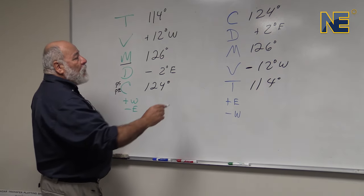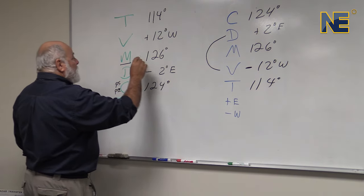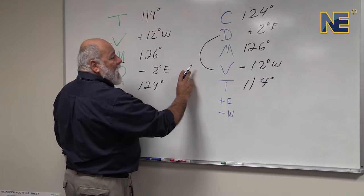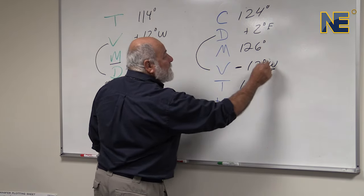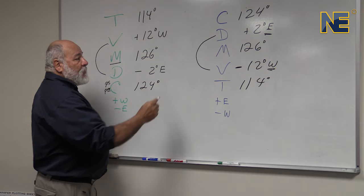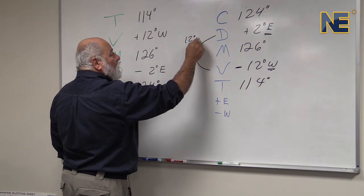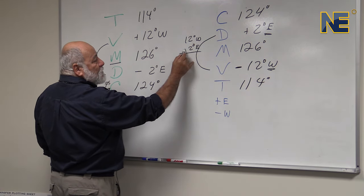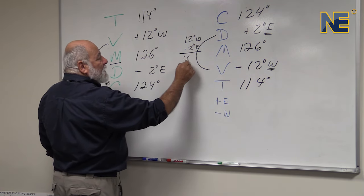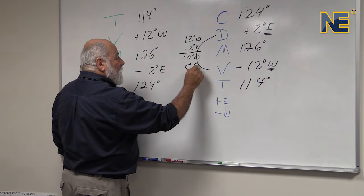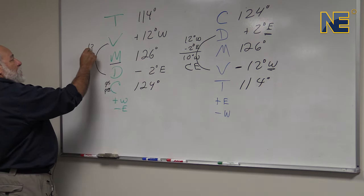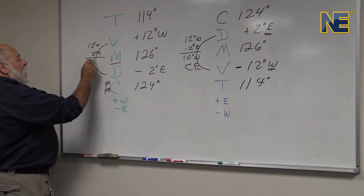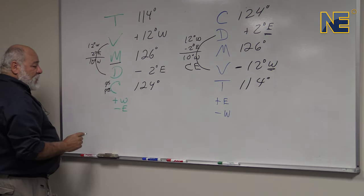To create compass error, we're going to take variation and deviation and combine them. The larger of the directions is going to determine our final direction. So if we have 12 degrees westerly and 2 degrees easterly and we combine them, we subtract the two, giving us a 10-degree westerly compass error.